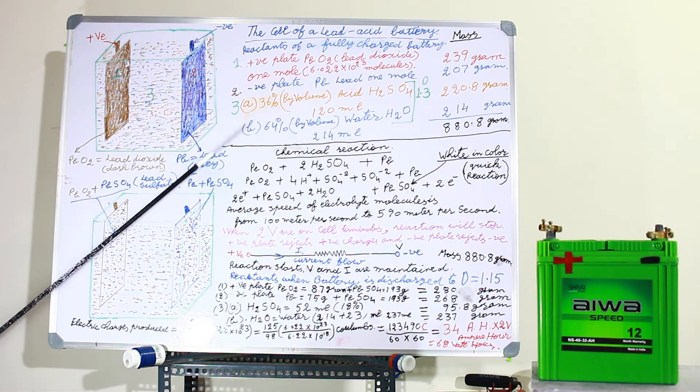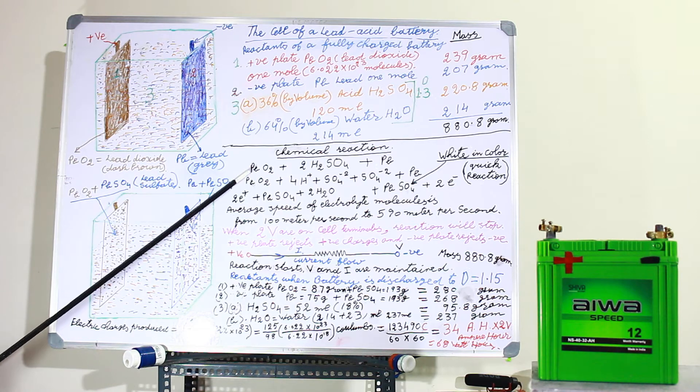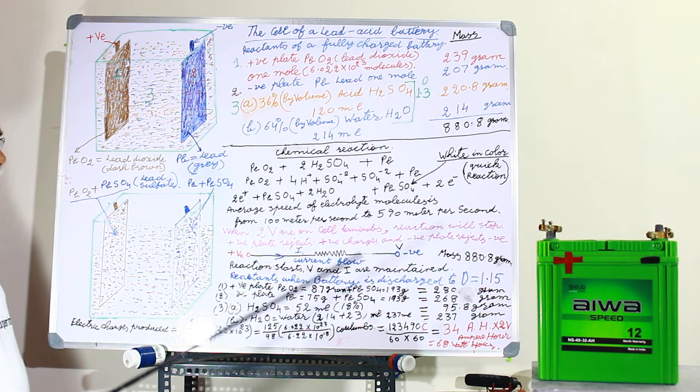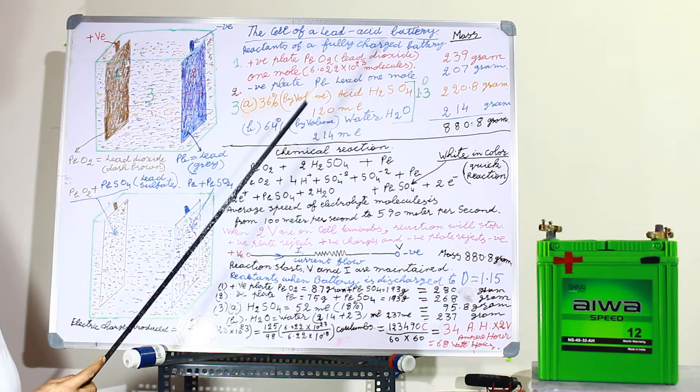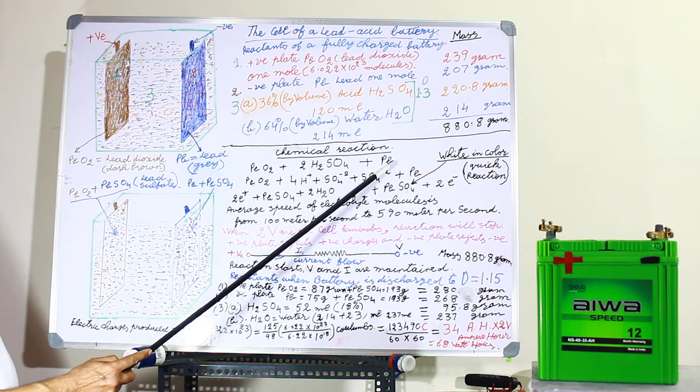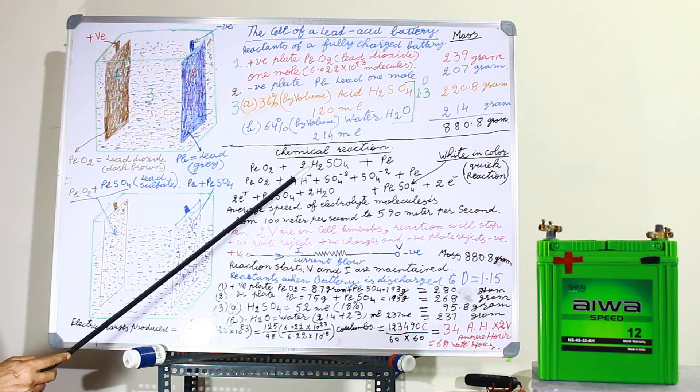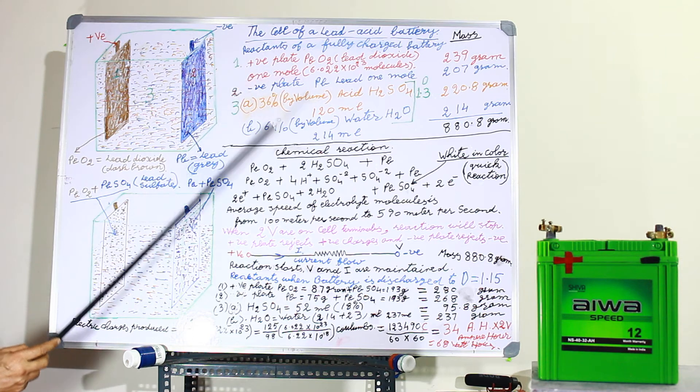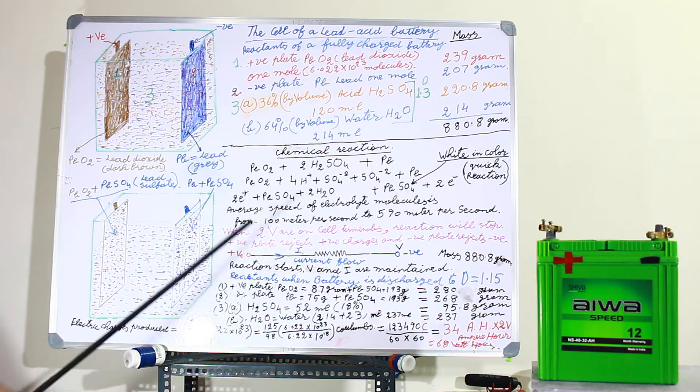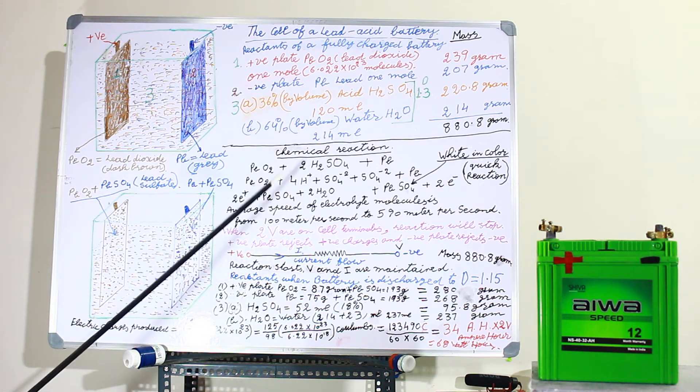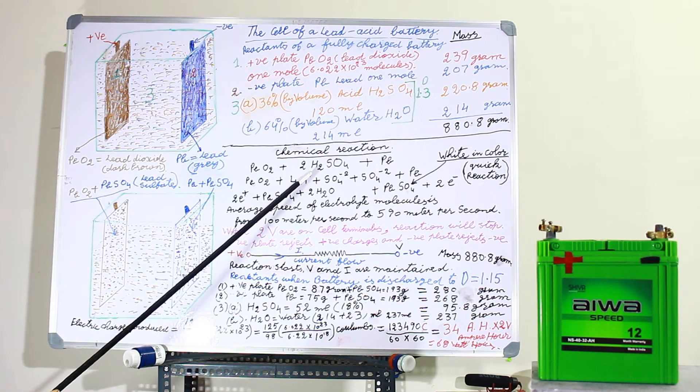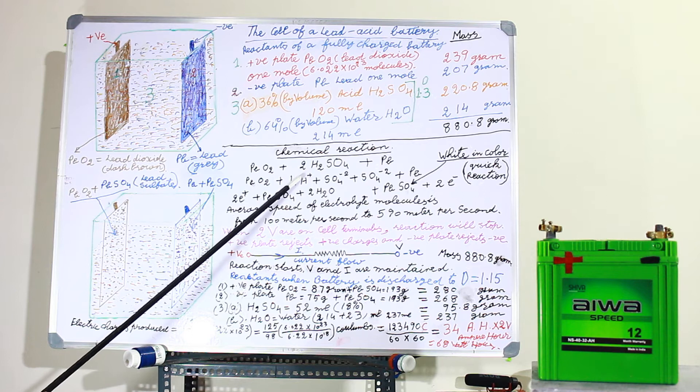In the chemical reaction I have taken 1 molecule of lead dioxide, 2 molecules of H2SO4, and 1 atom of lead. Now when 2 H2SO4 in the water is diluted, it reacts and separates into parts. What parts are these? It will create 4 hydrogen cations. Cations means positive charges.